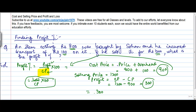The only thing I need to do is put these values into the formula. So profit percentage equals 300 upon 900, into 100. After cancellation, this gives us 100 upon 3, which is 33 and one-third percent. That's how I have computed the profit percentage.